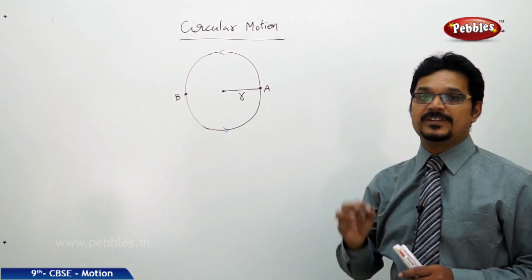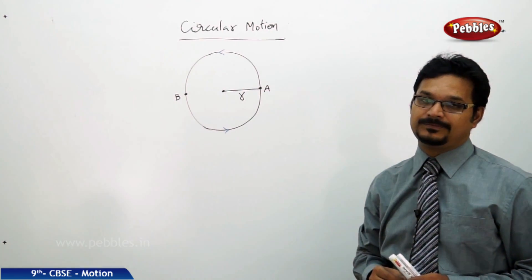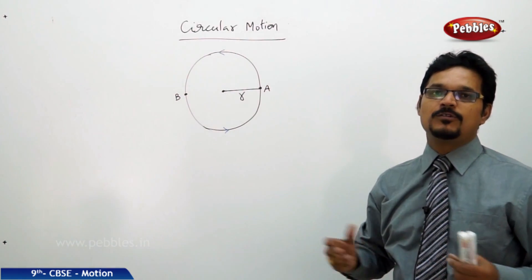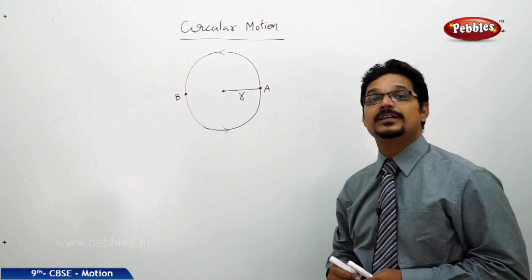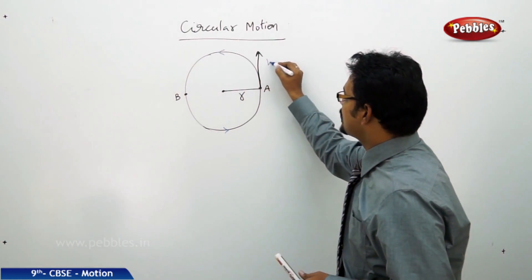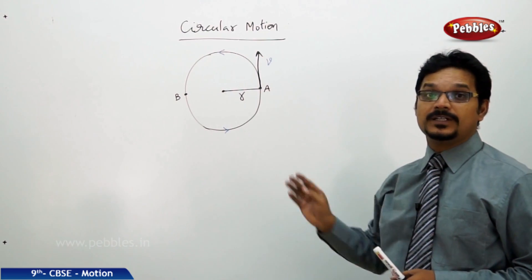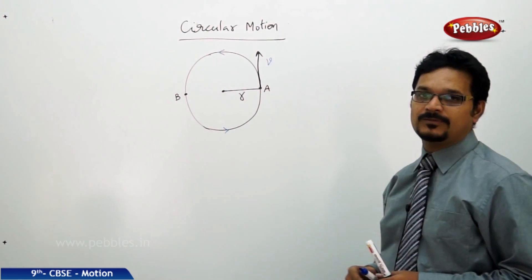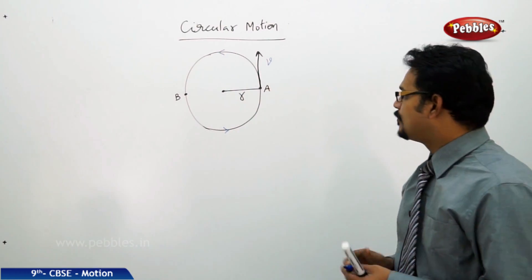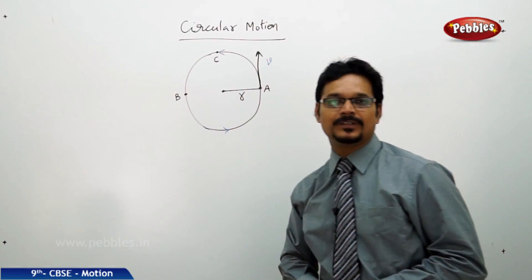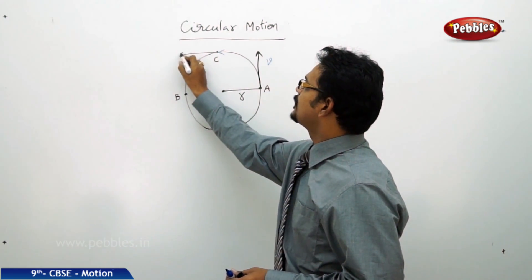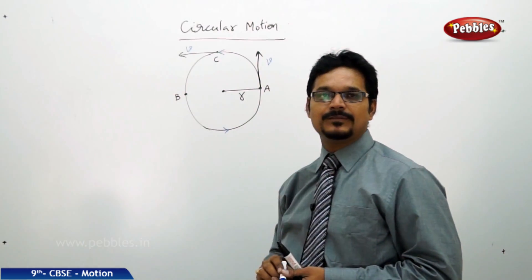In physics, we need to be specific to define any type of motion. At point A, if I ask you at what speed the body is moving, we can tell using the tangent. You draw a tangent at point A along the circle and that tangent gives the direction of speed. Now locate one more point, say C. If I ask what is the direction of motion at point C, again you draw a tangent — that is the direction of speed.